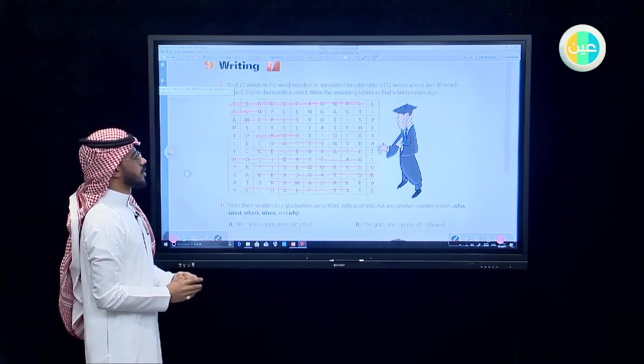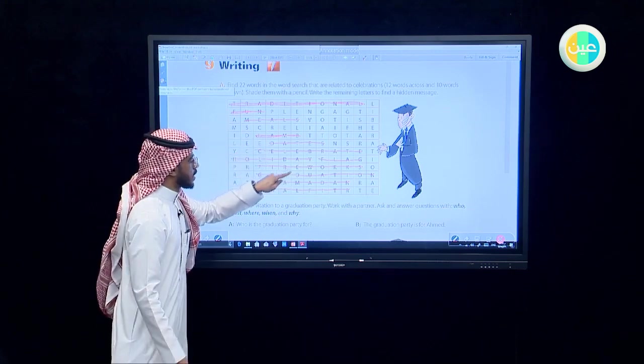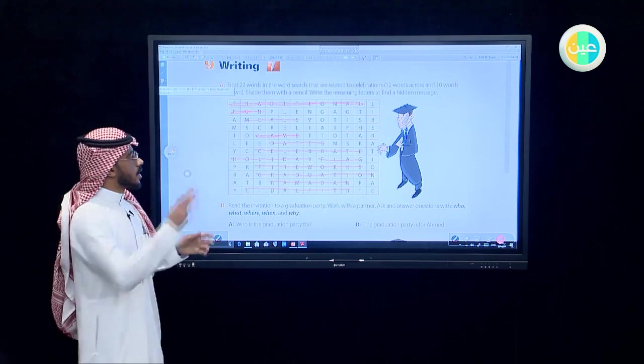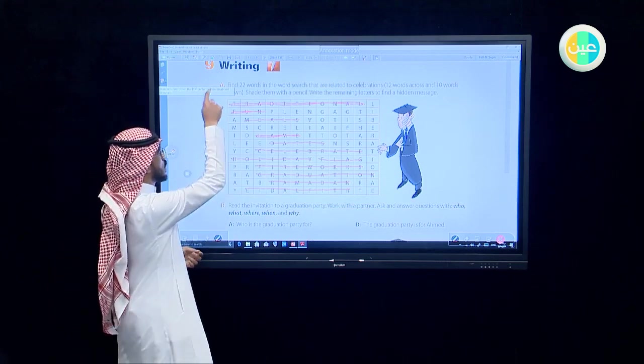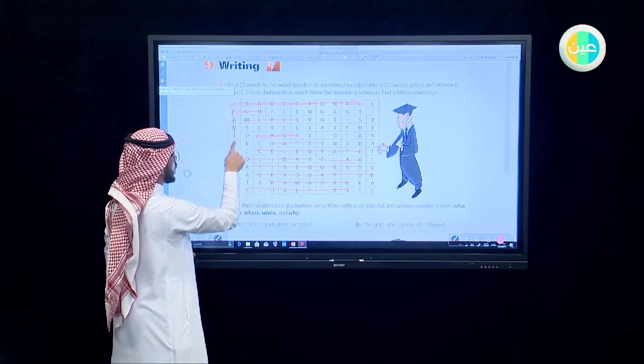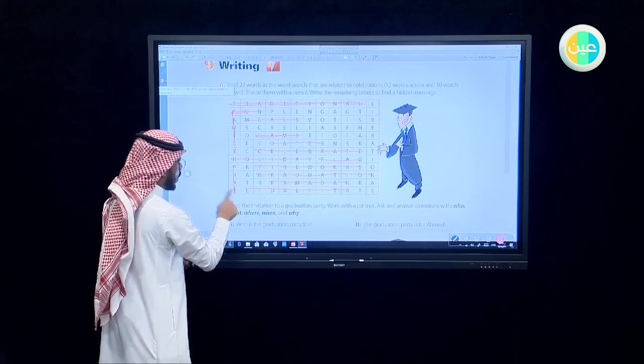Now we finish the 12 words across. Let's move to 10 words down. Let's start with this: family, pray, decorate.